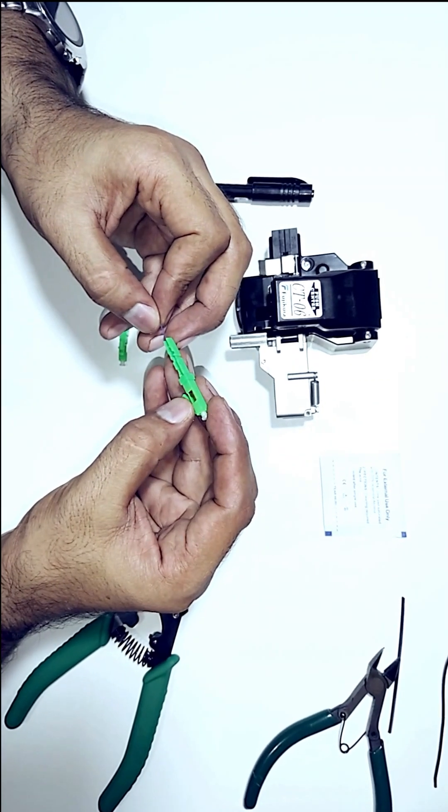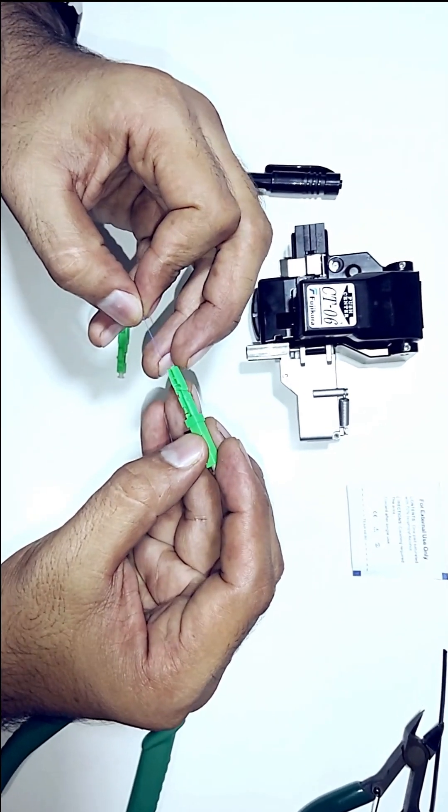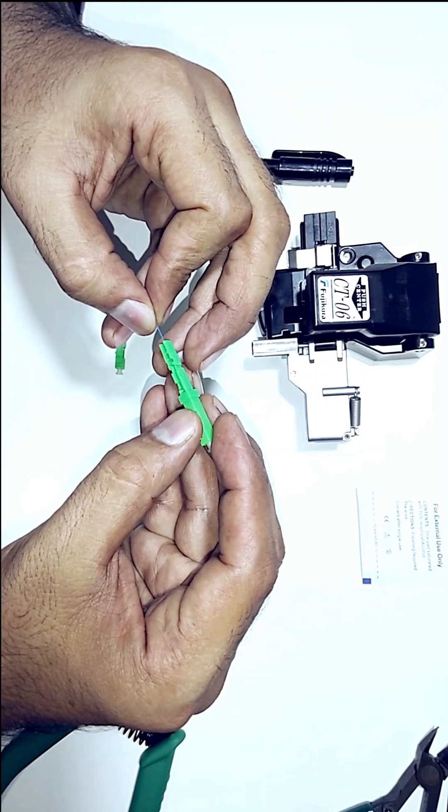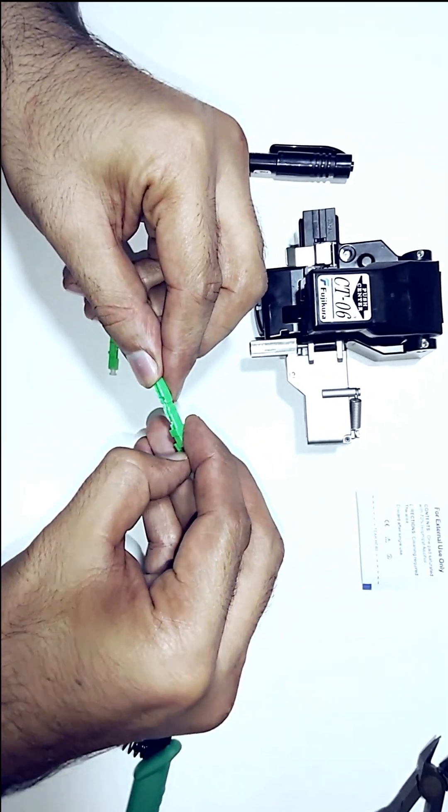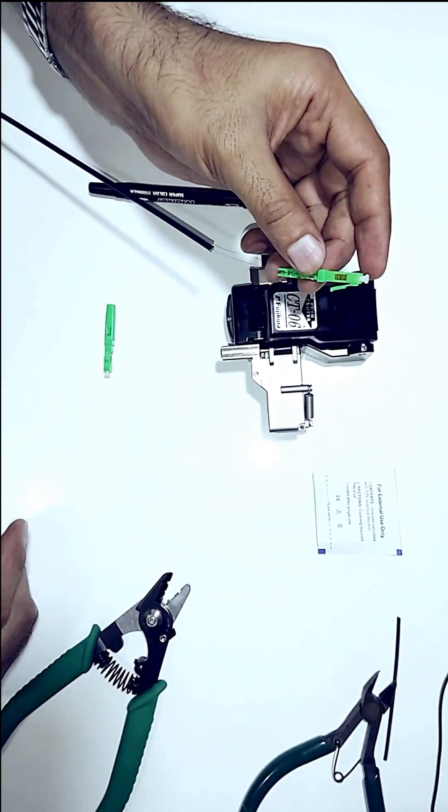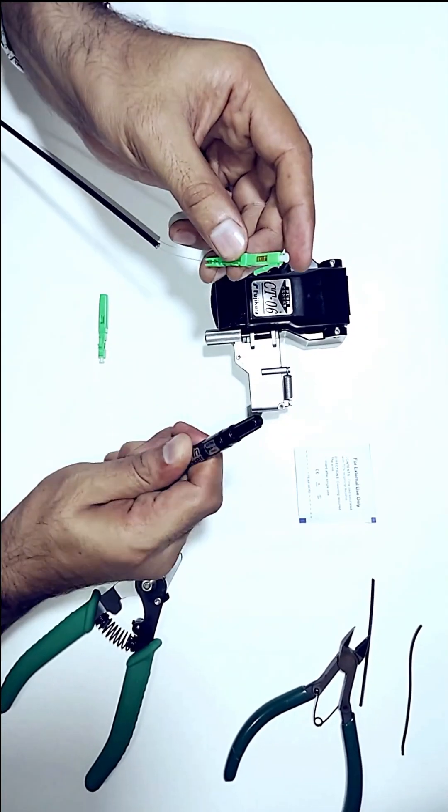For demonstration purposes, I'm working with a 2-foot fiber optic cable. We'll strip about 3 inches of the outer jacket. Since this is a 4-core cable, we'll only use one core for this process.